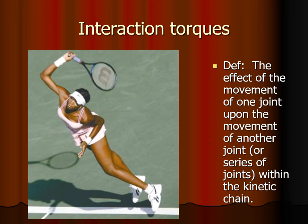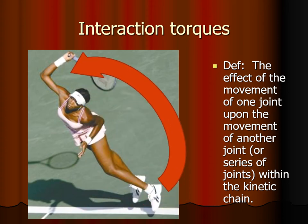For example, interaction torques explain how one can develop really high force or speed at an end effector — in this case a tennis racket — which is in the hand of Venus Williams who is about to deliver an overhead smash. The torque starts with her whole body rotating to the right over her feet, which are not even on the ground. The rotation is not at a really high angular velocity, but it's her whole body, so the torque contribution is pretty great.